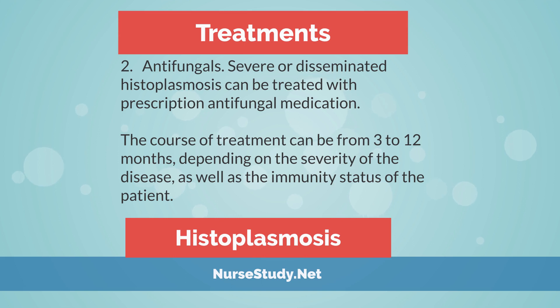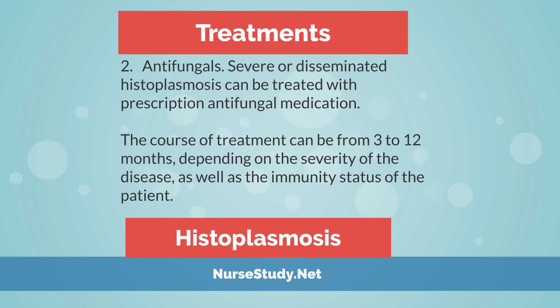2. Antifungals: Severe or disseminated histoplasmosis can be treated with prescription antifungal medication. The course of treatment can be from 3 to 12 months, depending on the severity of the disease as well as the immunity status of the patient.